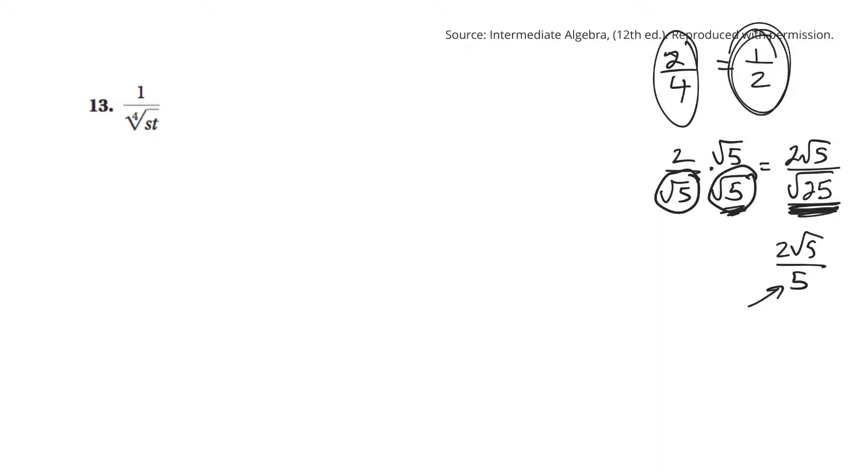Okay, so in this question here, I'm going to need to multiply top and bottom by something so that I can get rid of the radical on the bottom. So, I've got the 4th root of t. This 4 means, in order to get something out of the radical, I need to have 4 things inside.